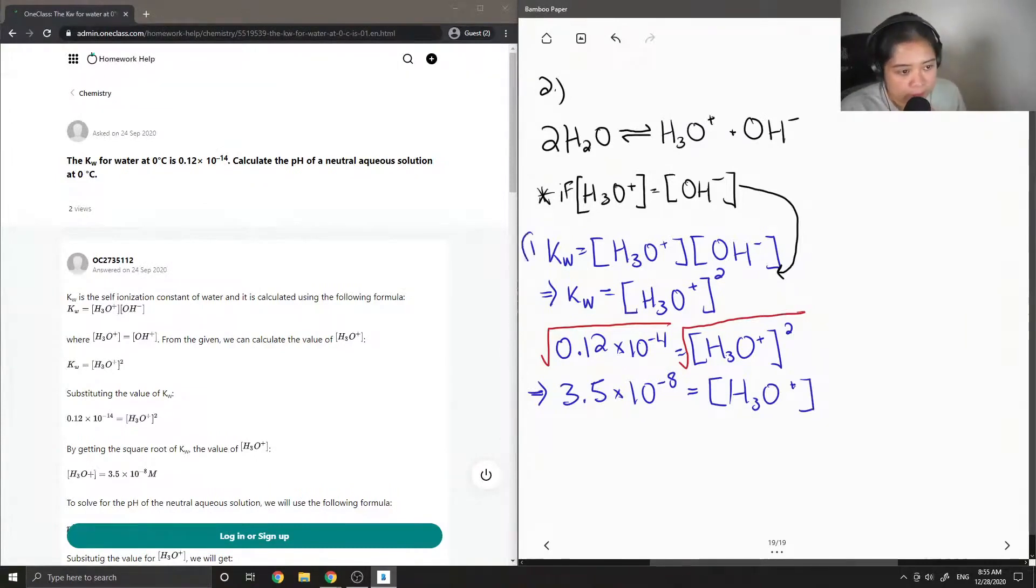Okay so this is step one of answering this question. The second part is to calculate for the pH, so the equation for finding pH is equal to negative log of the concentration of H3O plus.